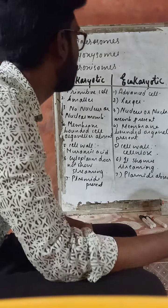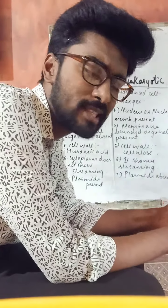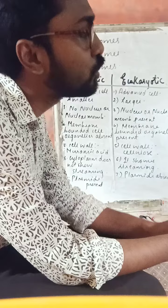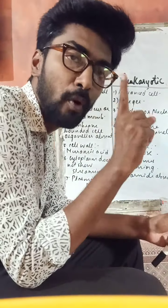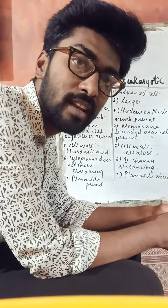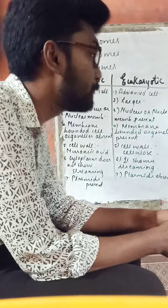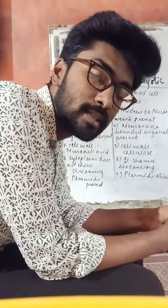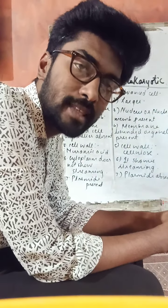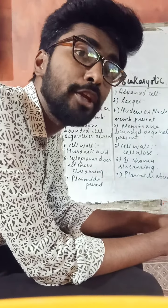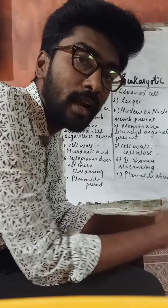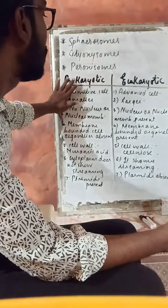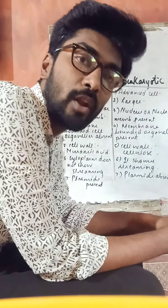Now let's briefly distinguish between prokaryotic and eukaryotic cells — a question worth about two marks. First point: prokaryotic cell is a primitive cell; eukaryotic cell is an advanced cell. Second point: prokaryotic cell is a smaller cell; eukaryotic cell is a larger cell. Third point: prokaryotic cell does not contain a nucleus or nuclear membrane, but eukaryotic cell contains a well-defined nucleus surrounded by a nuclear membrane.